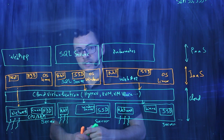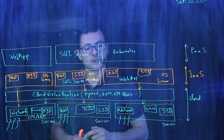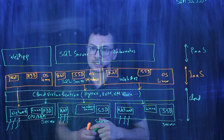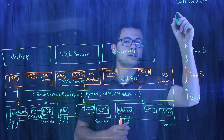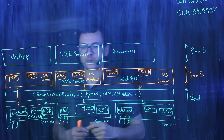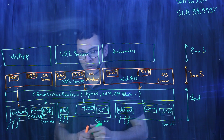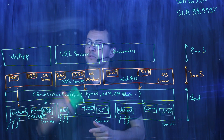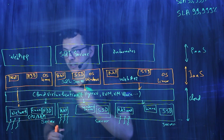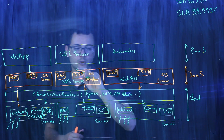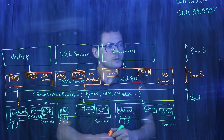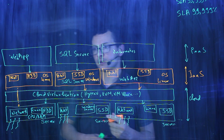With PaaS, you don't need to handle the OS, update it, or bring the certificate — everything is managed by the cloud provider. For database instances, the cloud provider will make sure the service is always up and running, will handle backup and restore, and will maintain a high SLA — 99.999% in the case of a managed SQL Server instance on the cloud. The same goes for web apps: the cloud will offer more services to scale up and out the different instances running your web application. These PaaS services all sit on top of the IaaS layer.